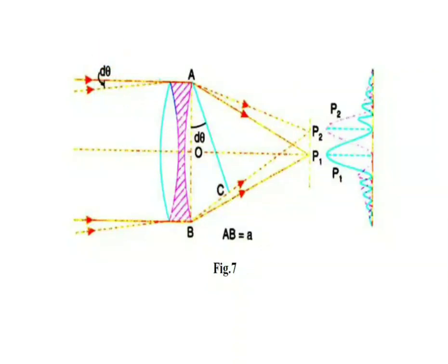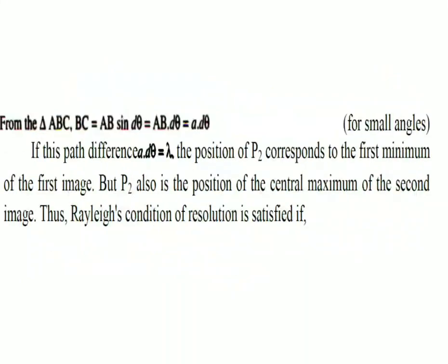Since the angle is dθ, BC = AB sin(dθ). Since dθ is a very small angle — as we know, for small angles sin(dθ) ≈ dθ — so BC = AB·dθ. We already discussed that AB, the aperture of the telescope objective, is assumed as small 'a'. So finally we get BC = a·dθ. This is the path difference between the AP2 and BP2 light rays.